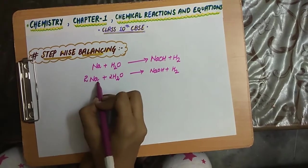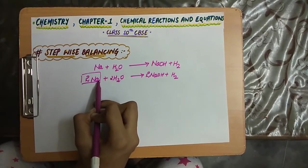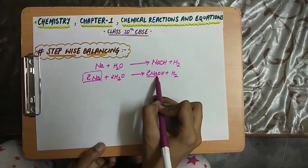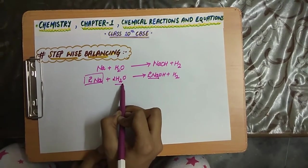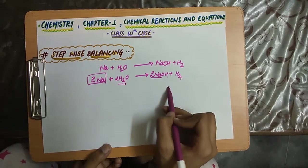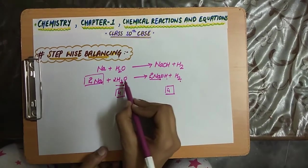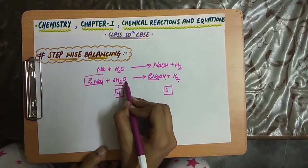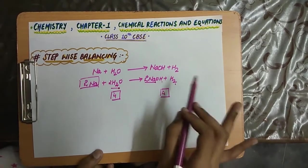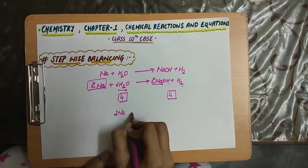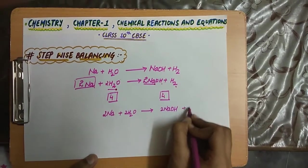If we multiply Na by 2 and NaOH by 2, the number of atoms of sodium on both sides become equal — 2 and 2. Also, the number of hydrogen atoms are equal: 4 on each side (2 + 2 here, and 4 there). And oxygen: the number of oxygen atoms is 2 on both sides. Hence, the whole equation gets balanced. The balanced equation is: 2Na + 2H₂O → 2NaOH + H₂.